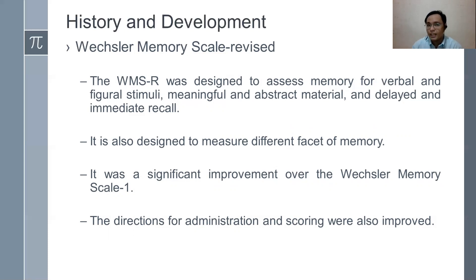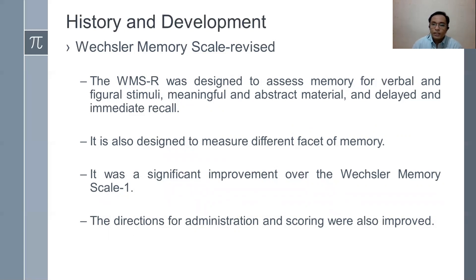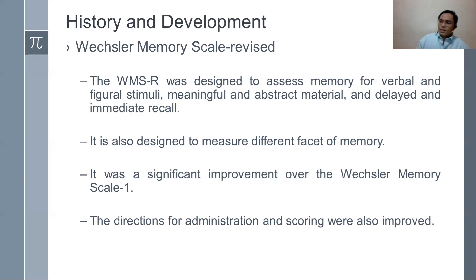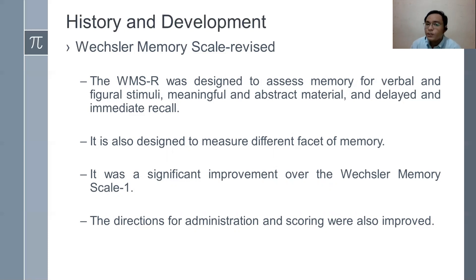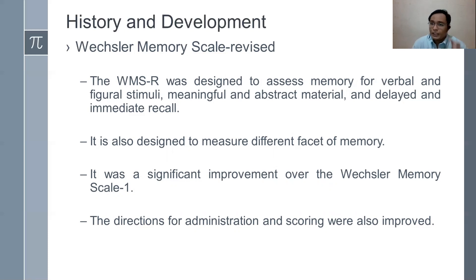The WMS Revised was designed to assess memory for verbal and figural stimuli, meaningful and abstract material, and delayed and immediate recall. In WMS 1, the focus was on short-term only, but the revised version introduced long-term and delayed memory. It was also designed to measure different facets of memory — differences now exist in what types of memory are assessed.